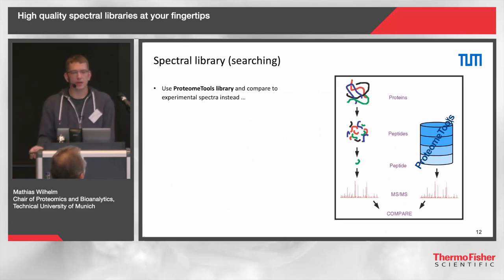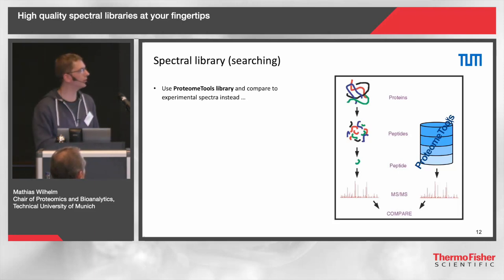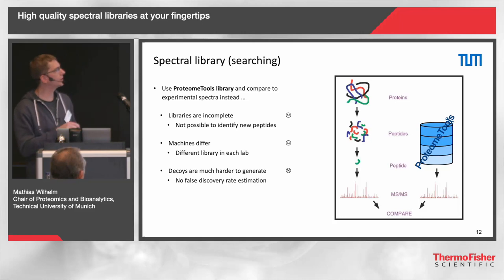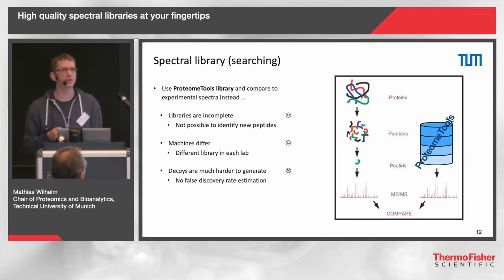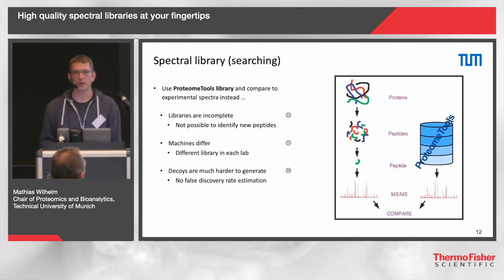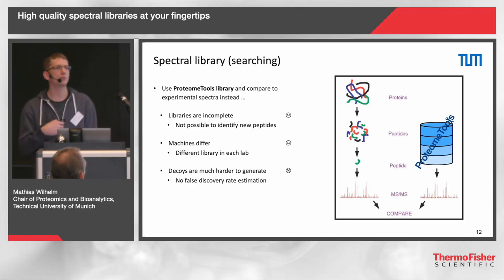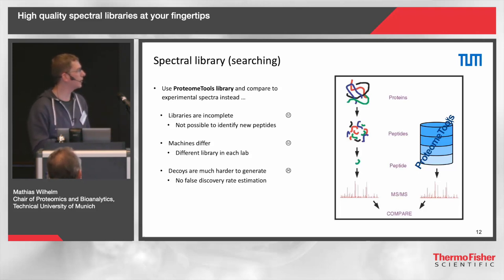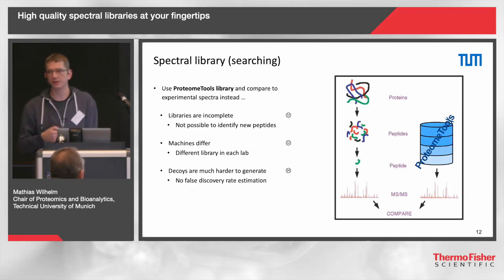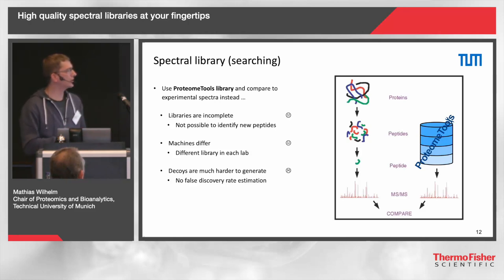The next natural step is to replace our own spectral library with the Proteome Tools library — we're more comprehensive than what a single lab can do, we've acquired spectra at different collision energies and fragmentation methods, and transferability to different machines is quite okay. However, we still have the issue of decoy generation — we can still only take target spectra and transform them into decoy spectra, which comes with a handful of different strings attached. As of right now, I think this is the best we can do.